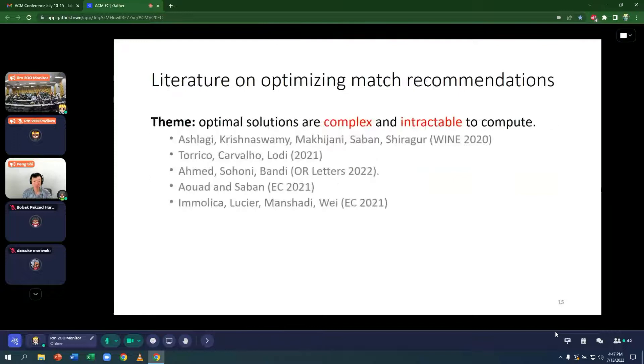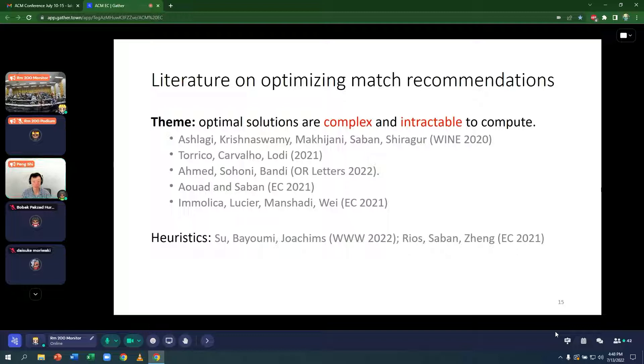The literature on optimizing match recommendations has a common theme, which is that optimal solutions are complex and intractable to compute. All of these papers study some model of optimal match recommendations, and they prove NP-hardness results. The best they can do are constant factor approximation guarantees. There are other papers based on heuristics.